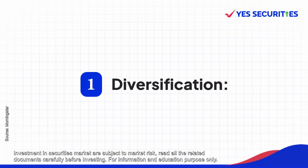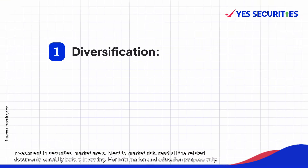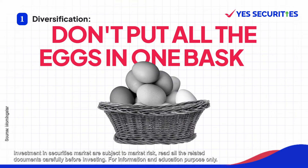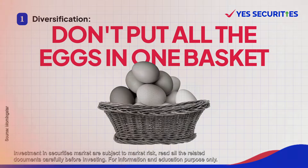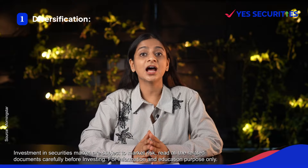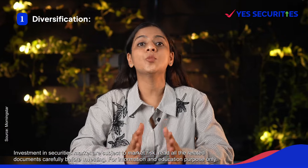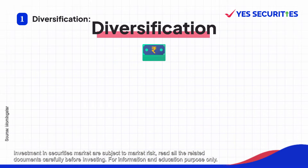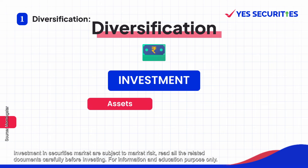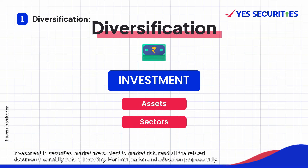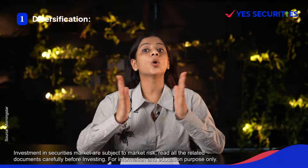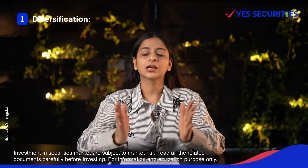First is diversification. Don't put all your eggs in one basket — avoid putting all your money in one place. Diversification means spreading your investments across different assets and sectors, such as gold, real estate, and shares, so that the overall risk will be less.